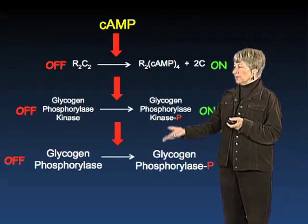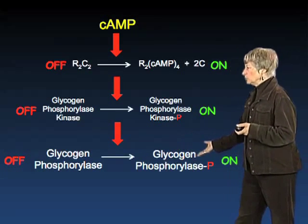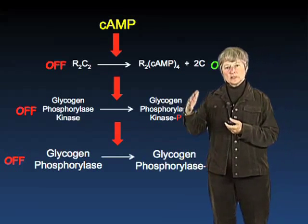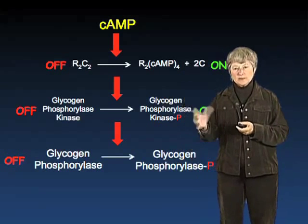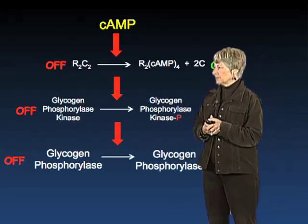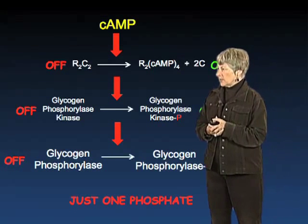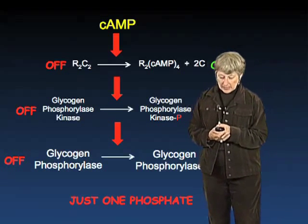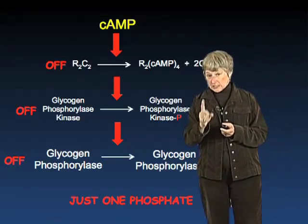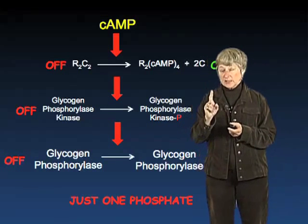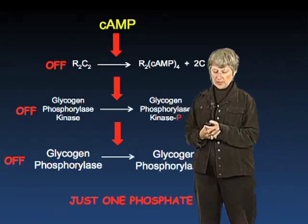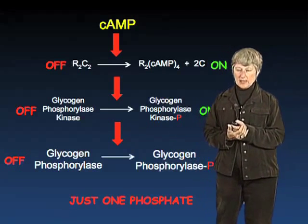These on-off switches are happening all the time in our cells. In these cases, it's just one phosphate. One single phosphate can make an enormous difference for a very large protein — determining whether it's active or whether it's inactive.